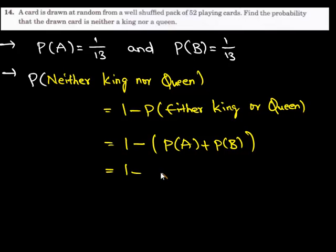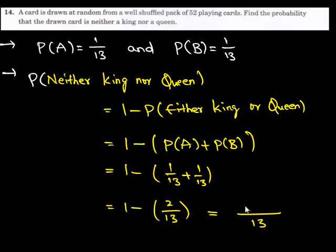Which is equal to 1 upon 13 plus 1 upon 13, which is 2 upon 13. On simplifying, we get 13 is LCM and on numerator 13 minus 2, which is 11 upon 13.